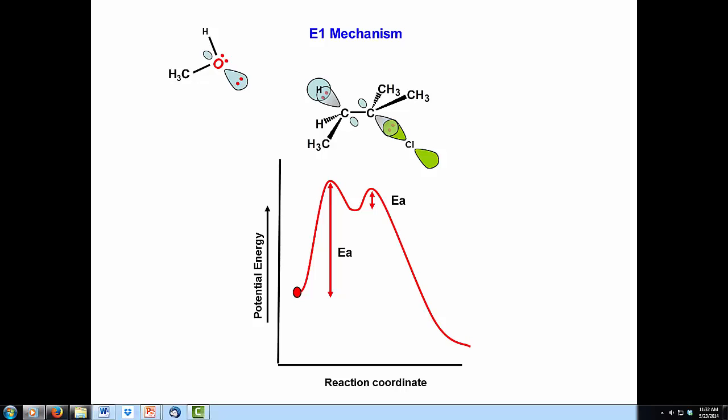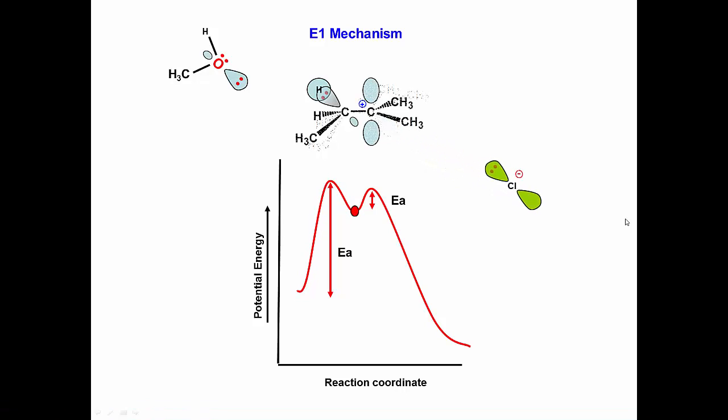The E1 mechanism. The first step in an E1 reaction is the breaking of the carbon leaving group sigma bond to form an unstable carbocation and a negatively charged leaving group.